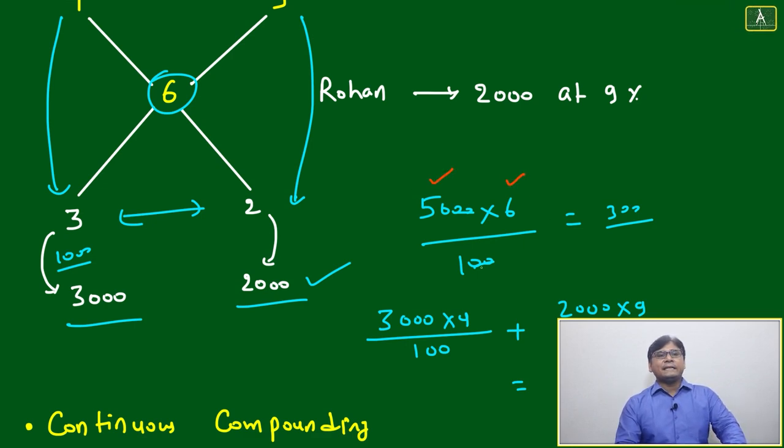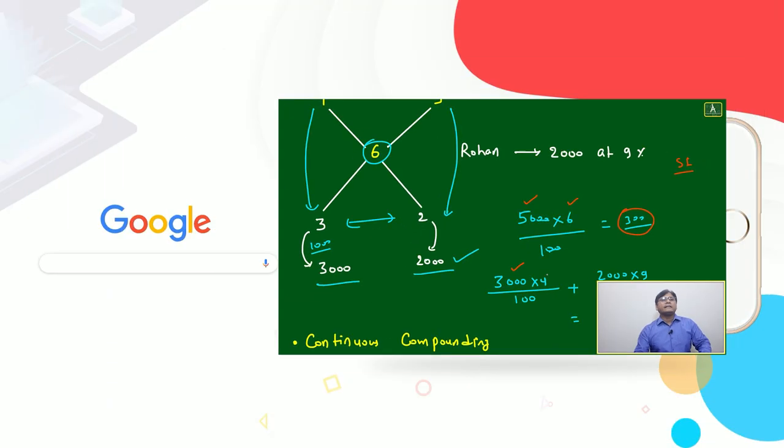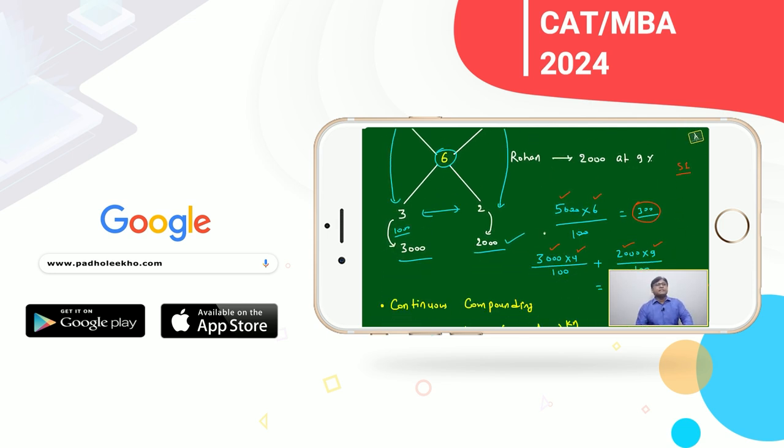We can verify if total amount we are investing 5000 at the rate of six percent - we are talking simple interest not compound interest - then you are getting 300 interest in one year. Now the same amount is split as 3000 at the rate of four percent and 2000 at the rate of nine percent. Then we will get 120 plus 180. That is also 300. Means our solution and thinking, everything is correct.